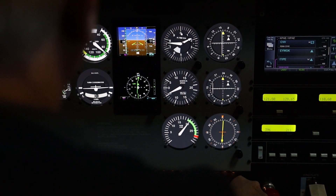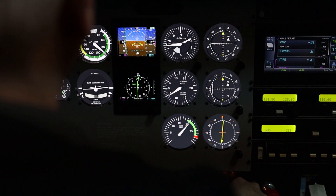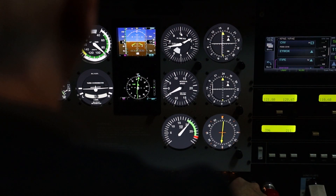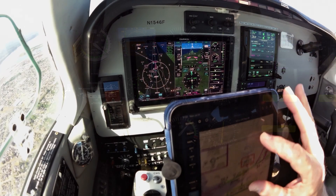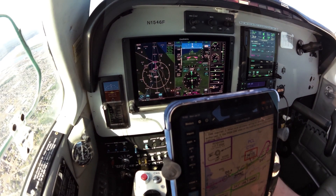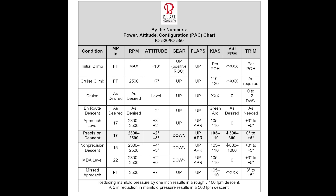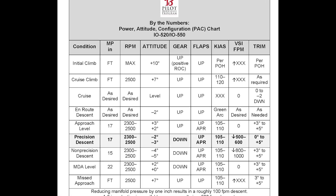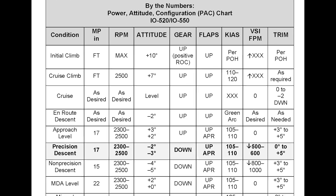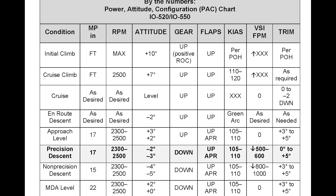Establishing this profile, or a slight variation that works in the particular 172 that you fly, helps you fly consistent approaches. In the A36 Bonanza that I fly, the numbers are different, but the concept is the same. I use the precision approach profile recommended by the American Bonanza Society, which in my airplane calls for a pitch attitude of minus 2 to 3 degrees, with the throttle set at about 17 inches of manifold pressure and prop at 2,500 RPM.